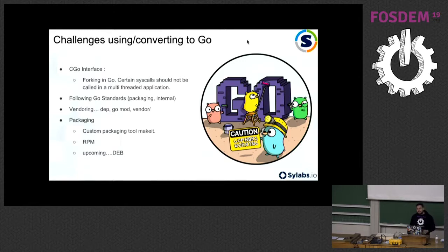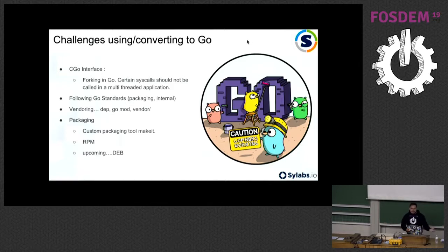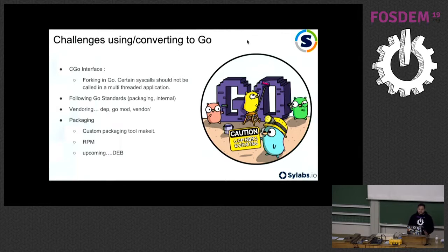If you had Python 2 or Python 3 dependency failures — which we were having with some users on a newer version of Python trying to compile Singularity — that's no longer an issue. Now you can just do a clean Git clone and start building Singularity because everything is there in the vendor folder. All the dependencies are already in the repo.